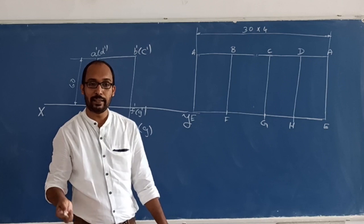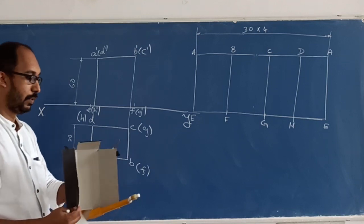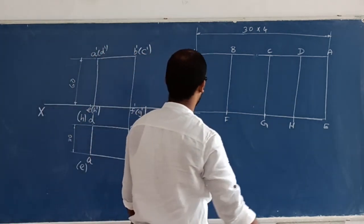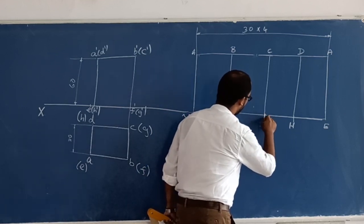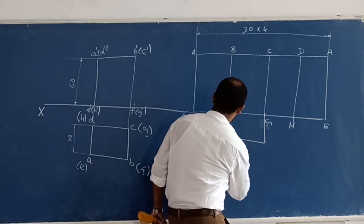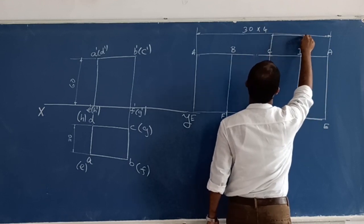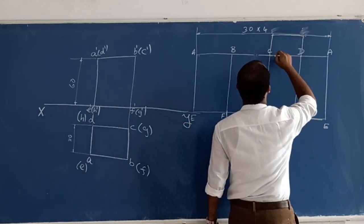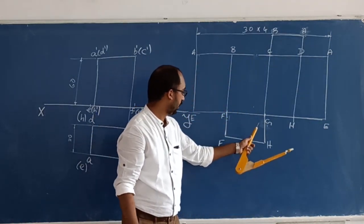Top and bottom faces. So the size is 30 by 30. Top is 30 and bottom is also 30. So faces are E, F, G, H — check this out. The labeling is A, B, C, D and here E, F, G, H.